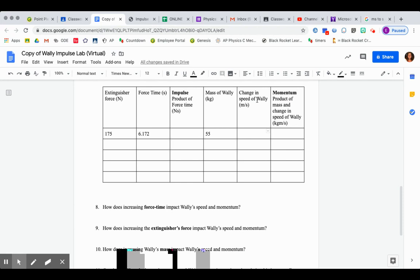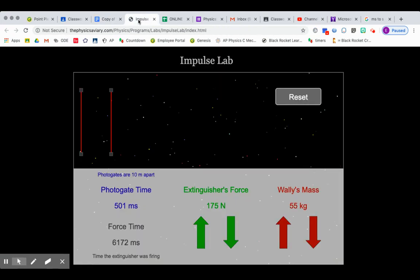Okay, next step is we need to find the change in the velocity of our astronaut Wally. What we know is that the distance between these photo gates here.